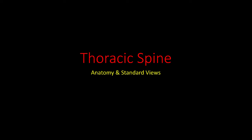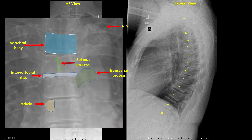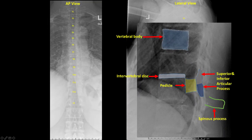Let's look at the standard views and anatomy of the thoracic spine. The standard views are the AP view and lateral view. In the AP view, identify the vertebral body, intervertebral disc, pedicle, spinous process, transverse process, and the ribs. In the lateral view, again identify the vertebral body, intervertebral disc, pedicle, superior and inferior articular process, and the spinous process.